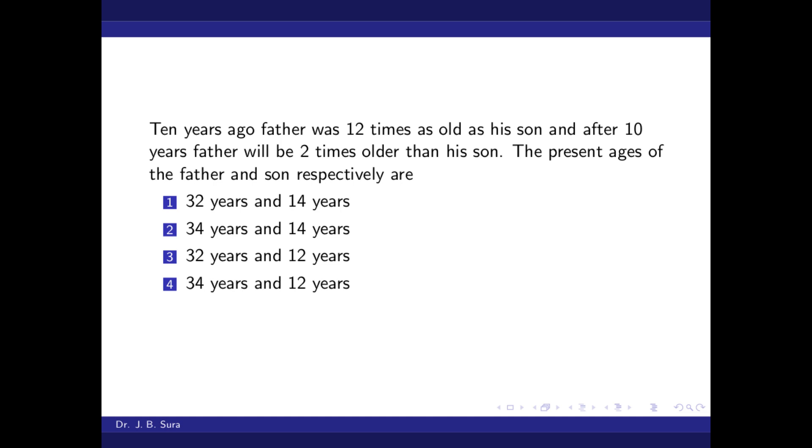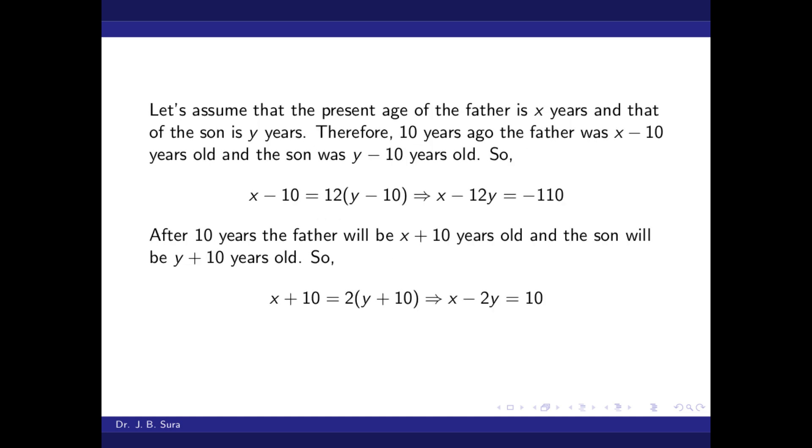Let us assume that the present age of the father is x years and that of the son is y years. So, 10 years ago, the father was x minus 10 years old and the son was y minus 10 years old. Therefore, as per the given information, x minus 10 is equal to 12 into bracket y minus 10, which means x minus 12y is equal to minus 110.